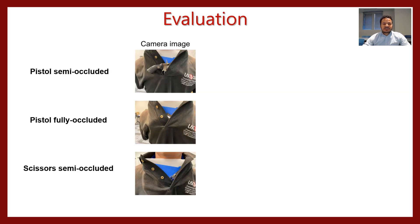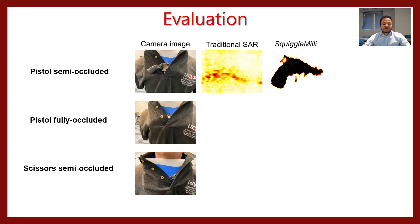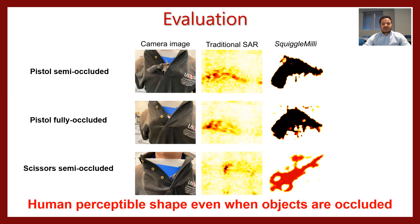To evaluate our system, we use multiple partially and fully occluded objects. As you see in the partially occluded pistol, the traditional SAR technique will not be able to produce the high-quality image, while SQL Millie is able to produce the high-quality shape which is human perceptible. This holds true even for the fully occluded pistol, as you see in the middle row. We also tested for scissors and this still holds true and we can see the recovered shape.